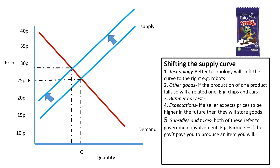Thinking about bumper harvests — the weather really does affect supply. This year is a terrible harvest for asparagus because it's been so cold, creating a reduction in supply. We've also got expectations: if the seller expects the price to be higher in the future, they will store their goods. For instance, if I'm selling a house and expecting house prices to be higher in the future, I might hang on to my house and reduce supply, because I'm expecting it to be worth more.